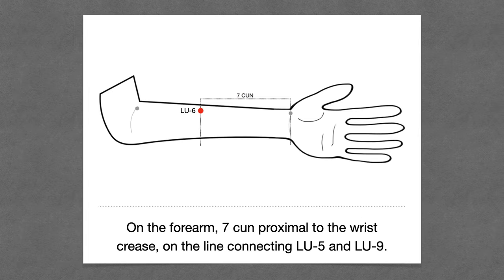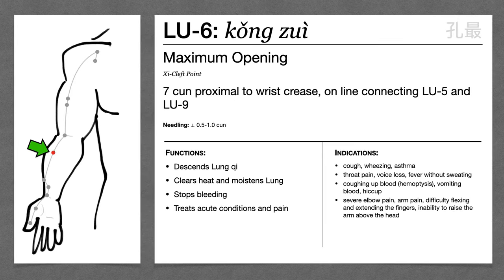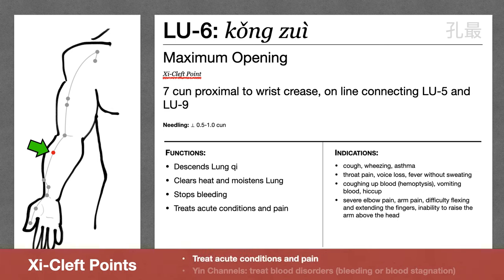Lung 6 is on the forearm, seven cun proximal to the wrist crease. Lung 6 is a xi cleft point. Xi cleft points treat acute conditions and pain. Here we see acute conditions like throat pain, loss of voice, or fever without sweating, usually due to wind heat or wind dryness. Acute conditions and pain can also mean pain along the channel, so we see things like elbow pain, arm pain, difficulty flexing and extending the fingers, and inability to raise the arm. In modern practice, Lung 6 is principally used for acute asthma attack.